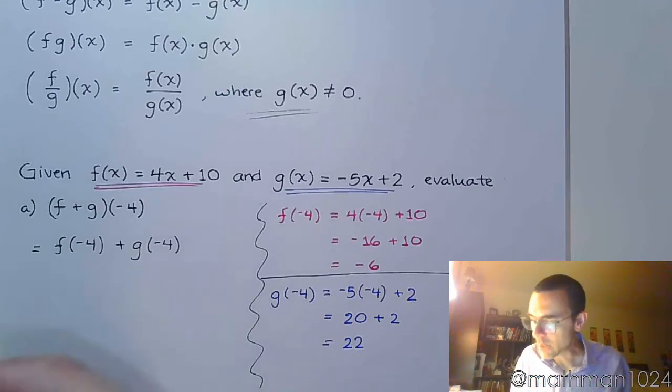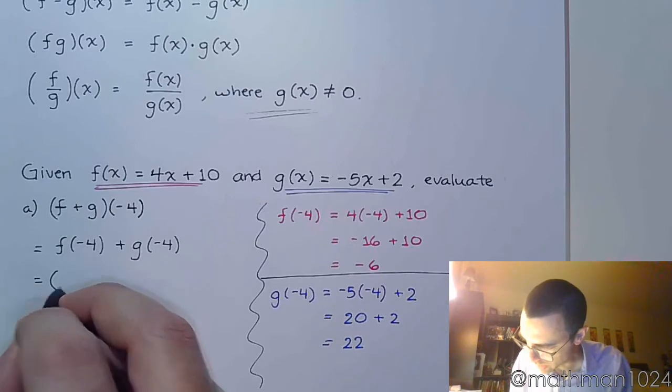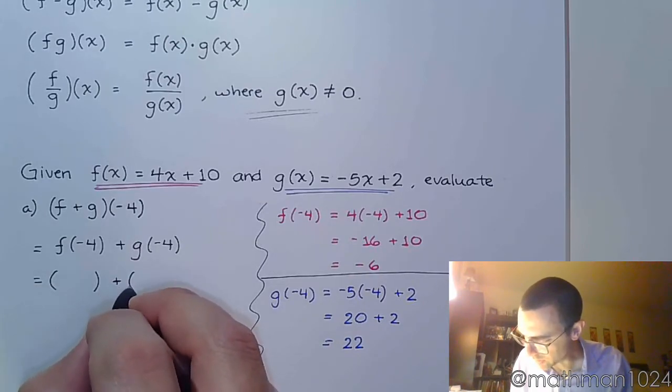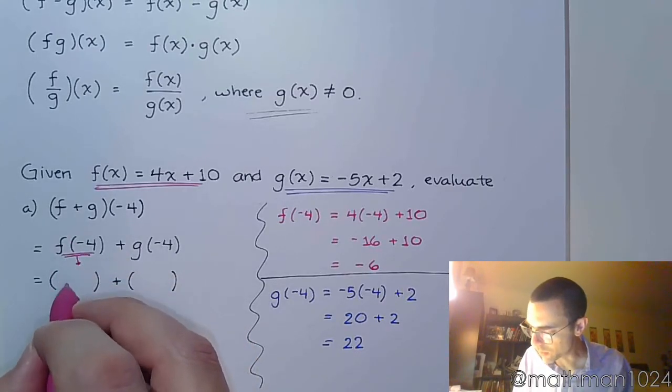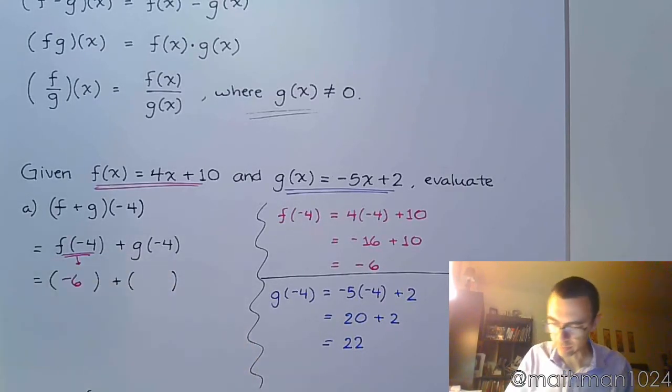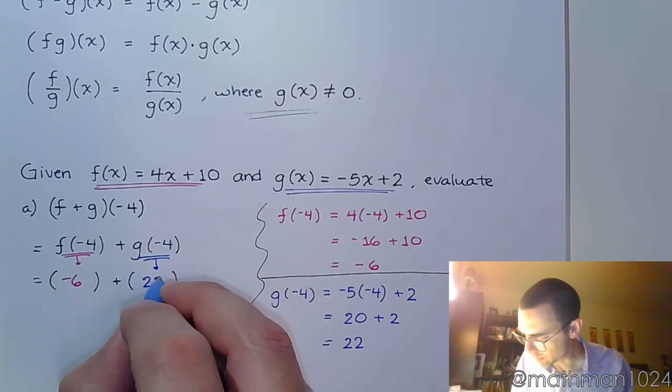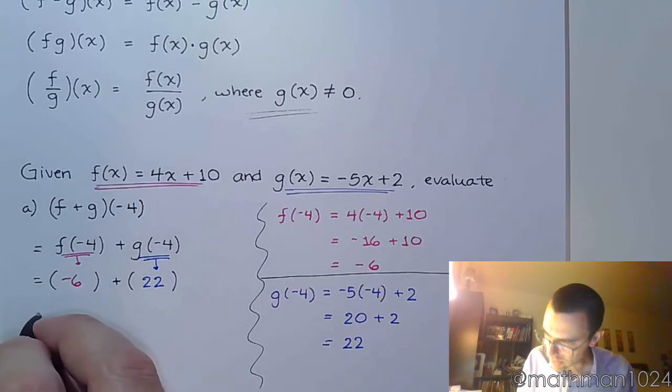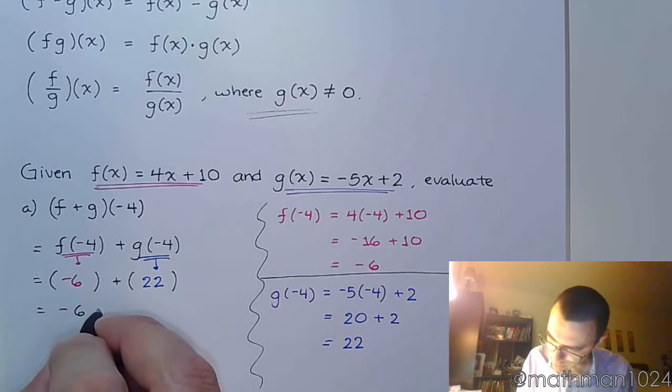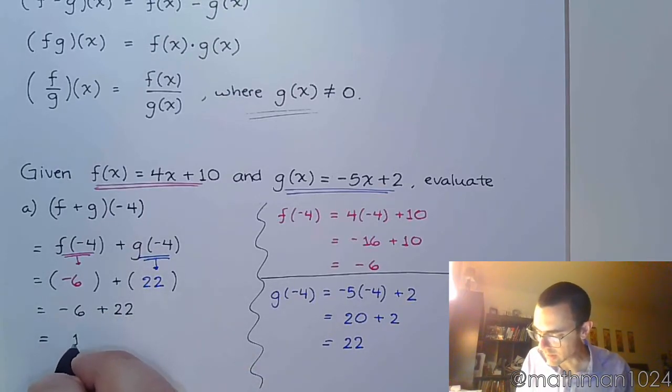So I've got those two individual numbers, and now I do what this says. It says add these guys. So, use parentheses when you plug in these evaluations. f(-4) is -6, and g(-4) is 22. And so we do what it says here, -6 + 22. When you free those guys from those parentheses, you combine, and you get positive 16.